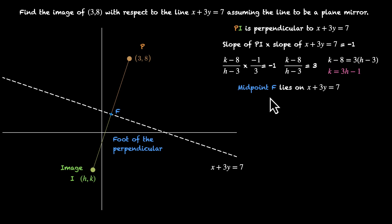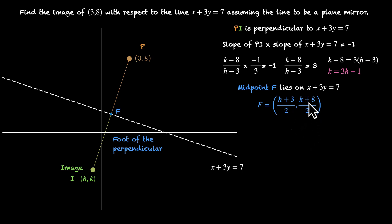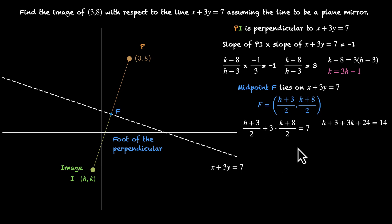Now let's form the second equation. The midpoint of P and I, which is F, lies on the line x plus 3y equals 7. The coordinates of F are (3 plus h) by 2 and (8 plus k) by 2. Since this point lies on the line, the coordinates satisfy the equation: (h plus 3) by 2 plus 3 times (k plus 8) by 2 equals 7. Simplifying: h plus 3k plus 24 equals 14, so h plus 3k plus 13 equals 0. That's our second equation.